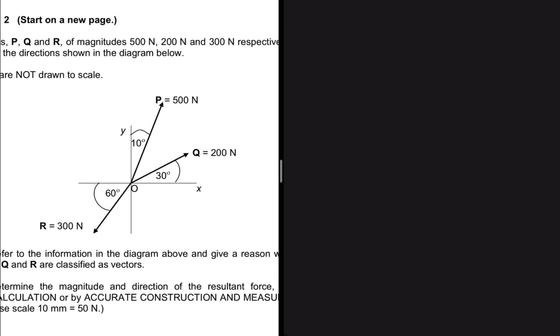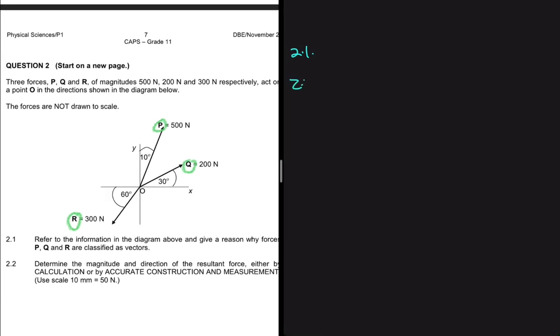On the first question, we're taking it back to basics. The question says: refer to the information in the diagram above and give a reason why forces P, Q, and R are classified as vectors. We can clearly see P, Q, and R with magnitudes of 500 newtons, 200 newtons, and 300 newtons respectively, and we're given angles. From the basics, if you have a magnitude and a direction, that quantity is a vector. If you only have a magnitude, it's a scalar. Because we have both magnitudes and directions, forces P, Q, and R are classified as vectors.